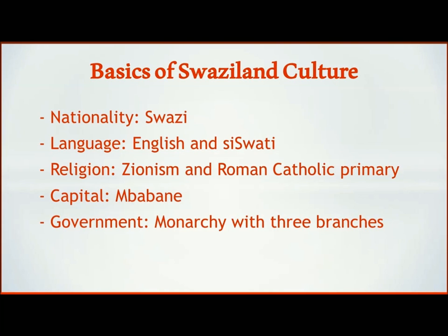The government is a monarchy consisting of three branches. The executive branch basically consists of the king — today that is Mswati III, who has been in power since 1986 — along with a prime minister and a cabinet. There are no elections for the executive branch; the monarchy is hereditary and the prime minister is appointed by the monarch. The legislative branch consists of a Senate with 30 seats and a House of Assembly with 65 seats, and there are elections for the House of Assembly.